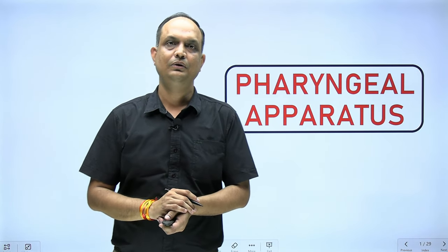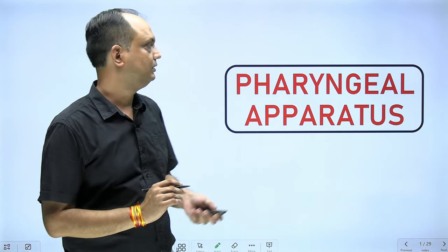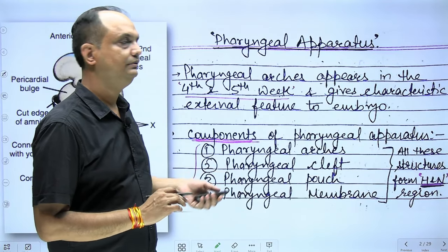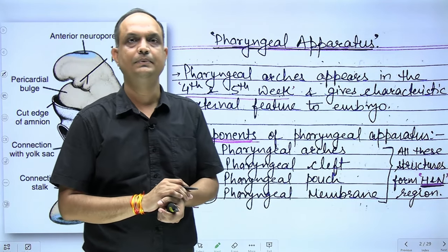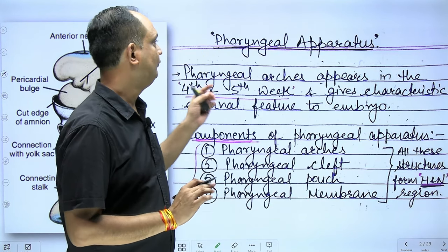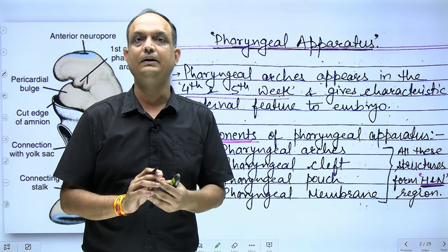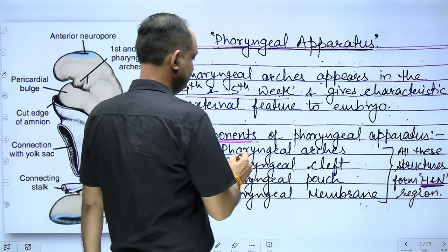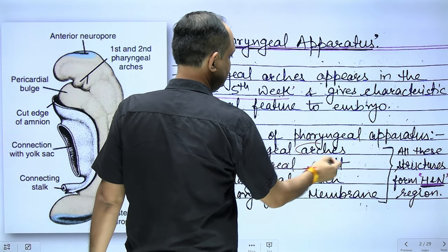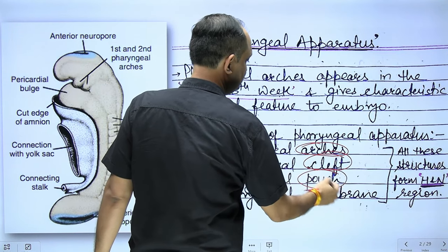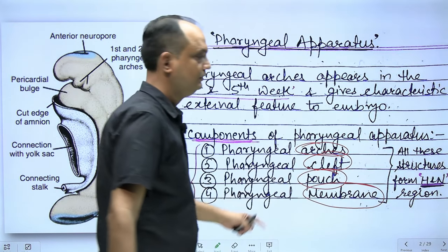Hello students. In today's lecture, we will talk about the pharyngeal apparatus, which is a very important short note. This apparatus is made up of four components: pharyngeal arches, pharyngeal cleft, pharyngeal pouch, and pharyngeal membrane.